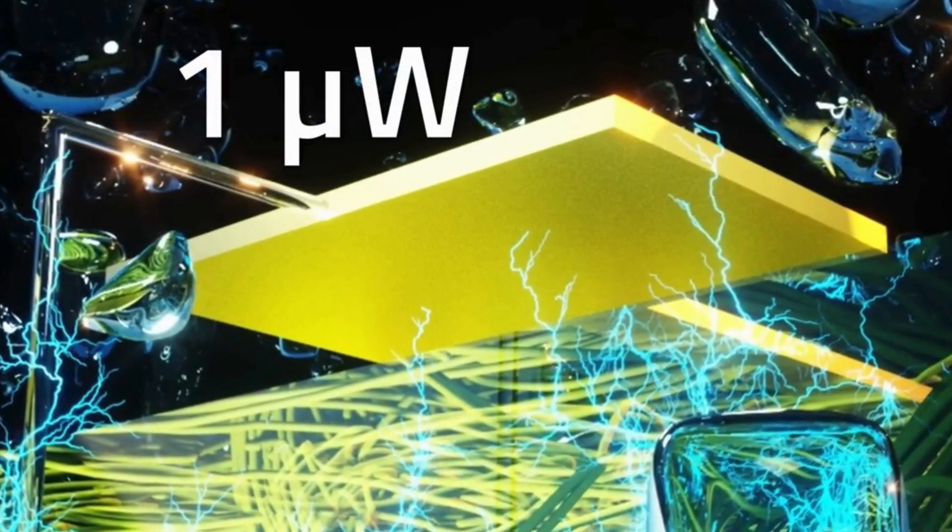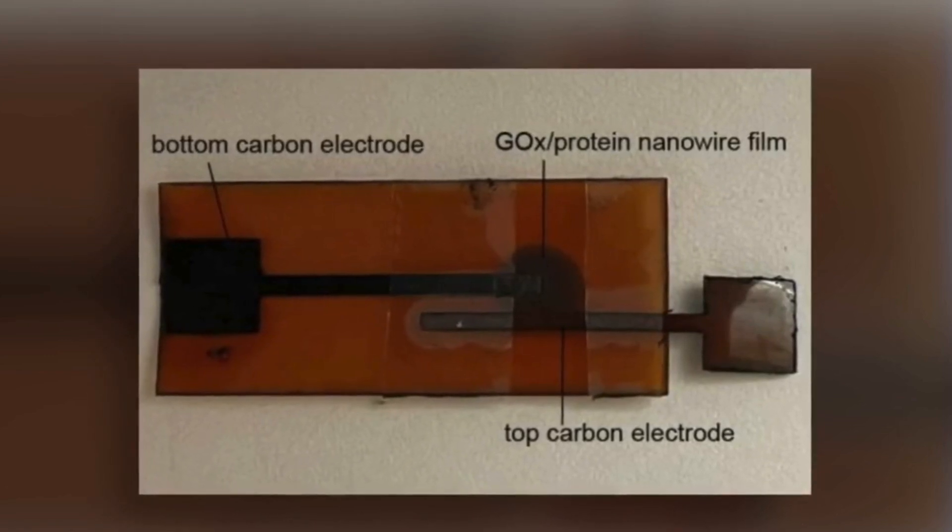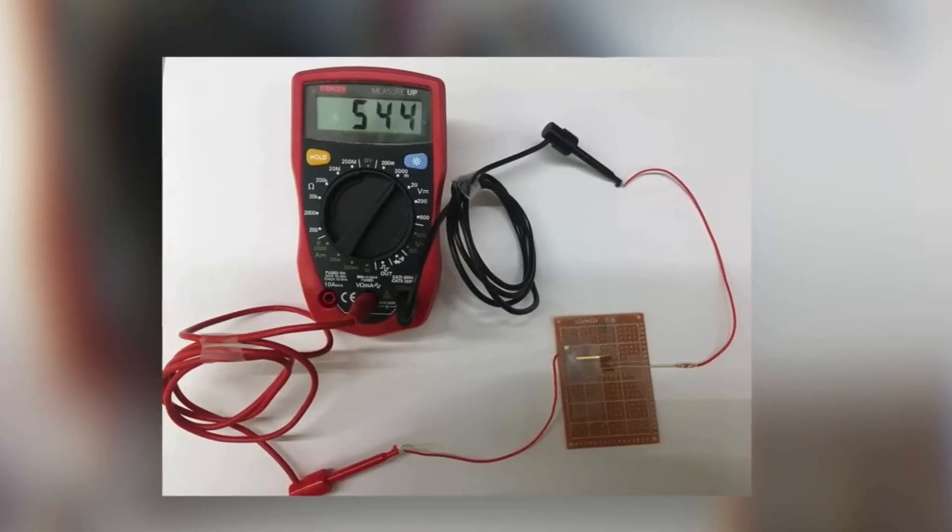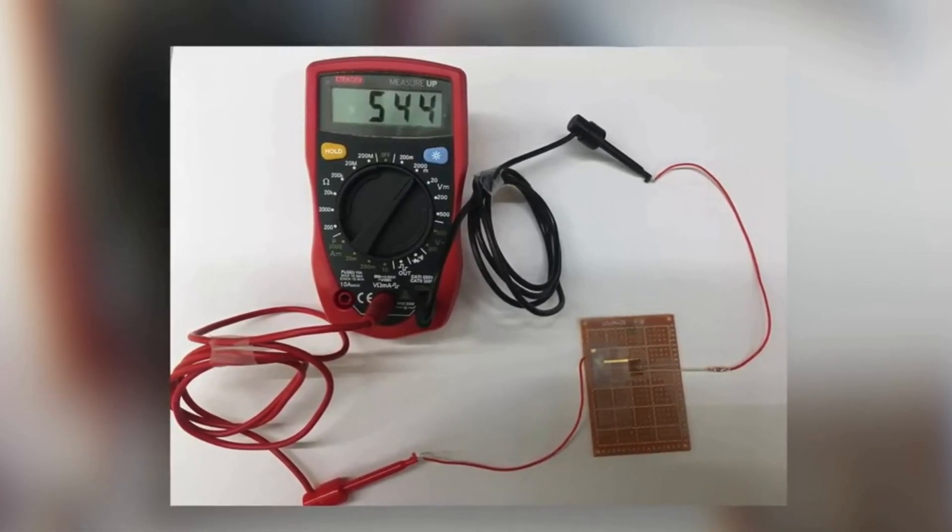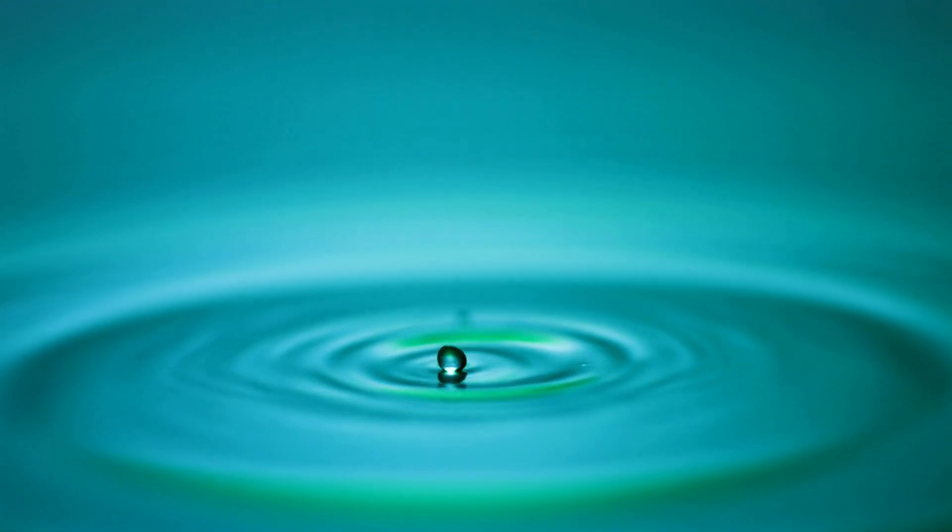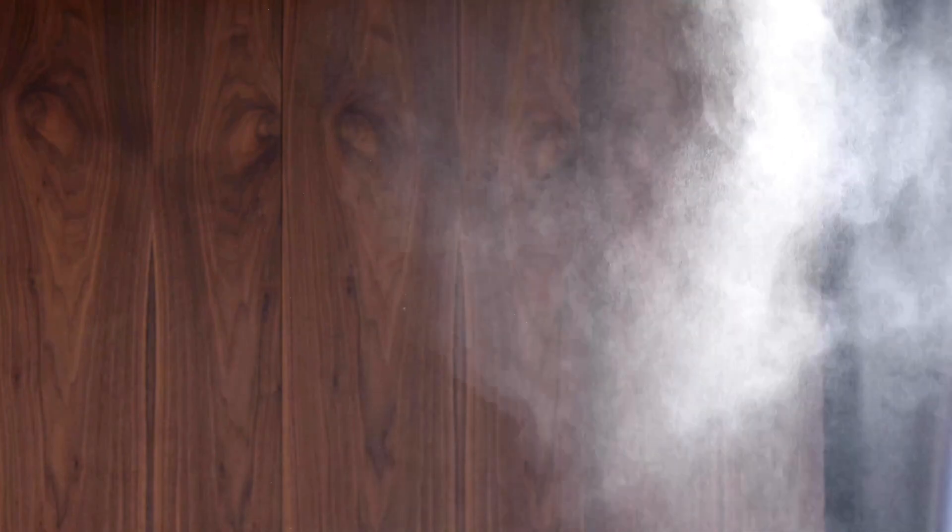They've developed nanostructures only 100 nanometers thick, significantly finer than a human hair. These structures act as selective barriers for water molecules in the air, creating a complex maze that restricts their movement. Within these constraints, the water molecules' movements initiate a process believed to be deprotonation, transforming their kinetic energy into electrical energy. This intricate interaction opens up new avenues for generating power from the humidity in our atmosphere.